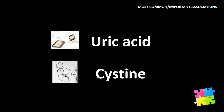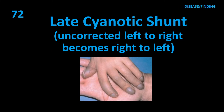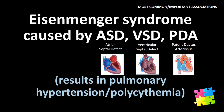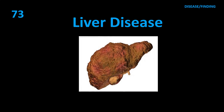Item 72: Late cyanotic shunt — uncorrected left-to-right becomes right-to-left: Eisenmenger syndrome, caused by ASD, VSD, or PDA. Results in pulmonary hypertension and polycythemia.